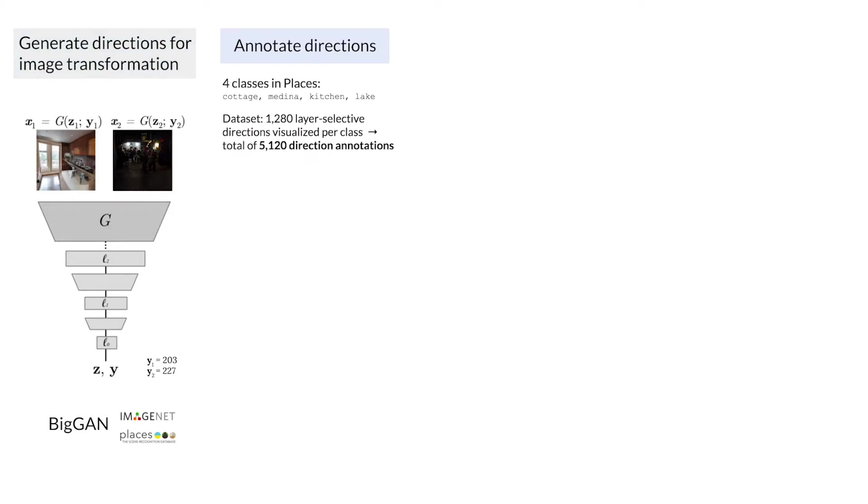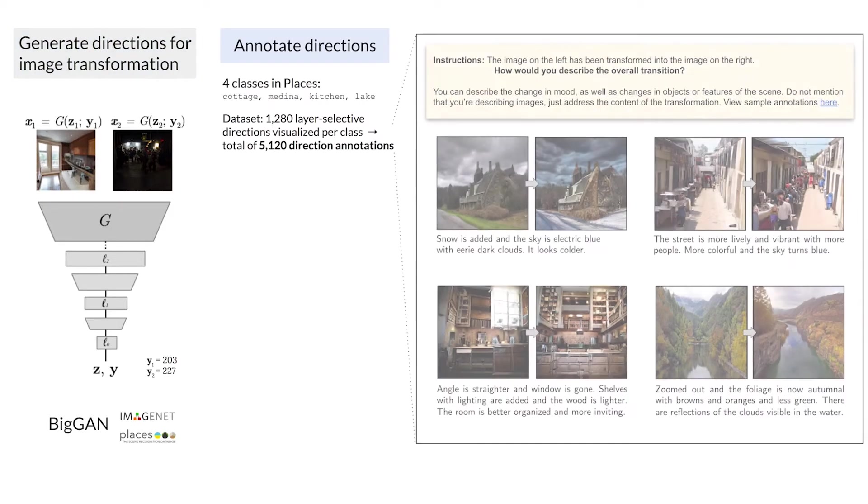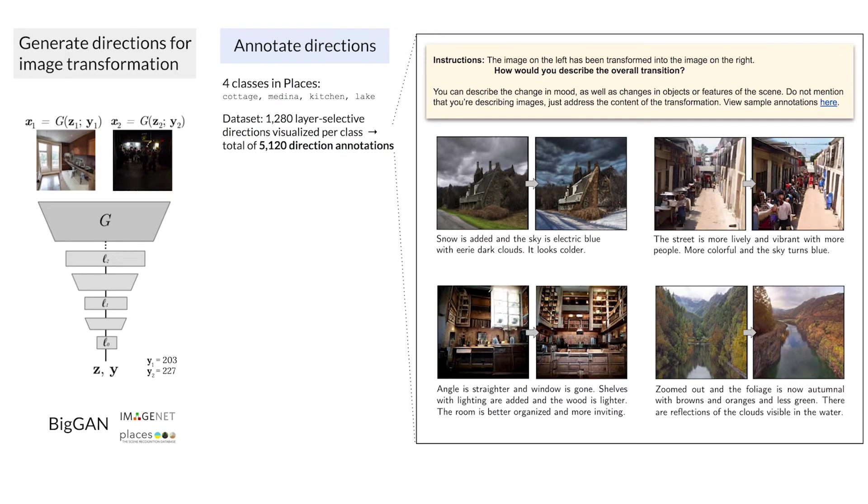We collect a dataset of direction annotations on Mechanical Turk. You can see examples here. We focus on four image categories in BigGAN places: Cottage, Medina, Kitchen, and Lake. But our method is fairly model-agnostic, and in the paper we show generalization to BigGAN ImageNet, and invite you to experiment with other models. Annotations are pre-processed and lemmatized, producing multiple concepts associated with each direction.